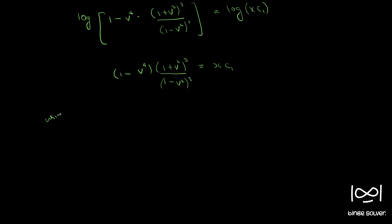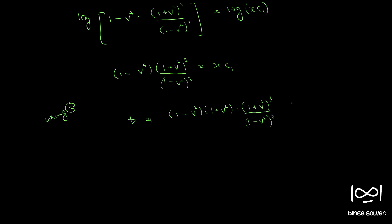Using equation 2, v = y/x. Before substituting, we cancel out: 1 minus v⁴ is nothing but (1 minus v²)(1 plus v²). So we have (1 minus v²)(1 plus v²) times (1 plus v²)³ by (1 minus v²)³ equals xc₁. After cancellation, the power of (1 minus v²) becomes 2 and (1 plus v²) becomes 4.